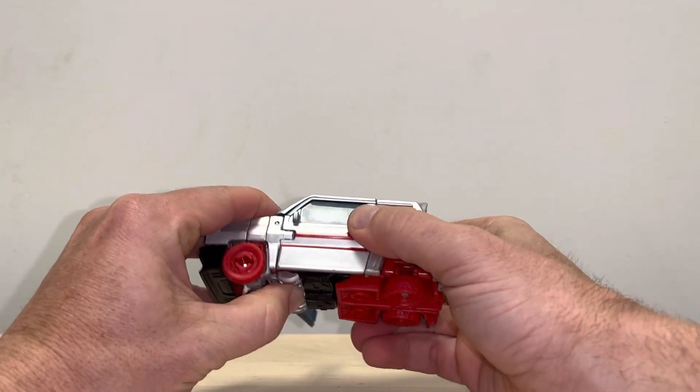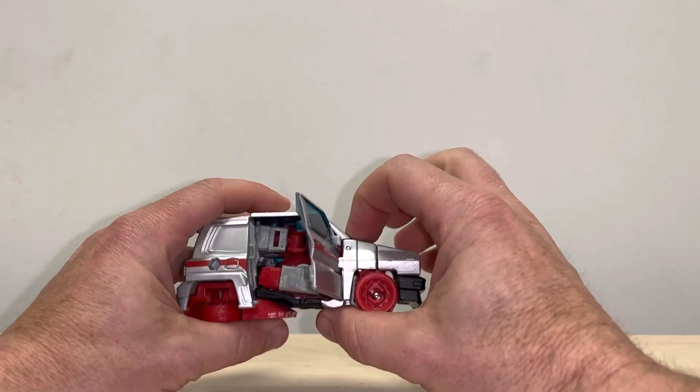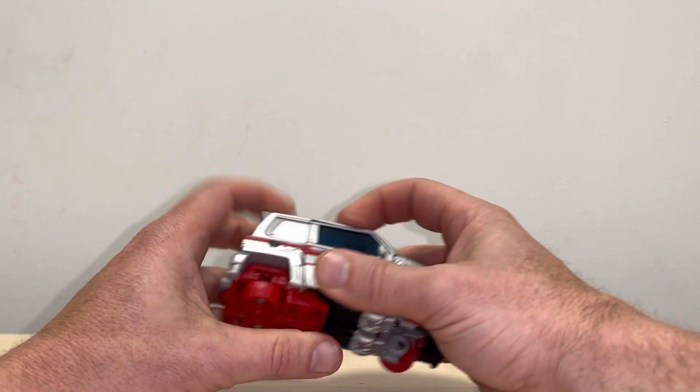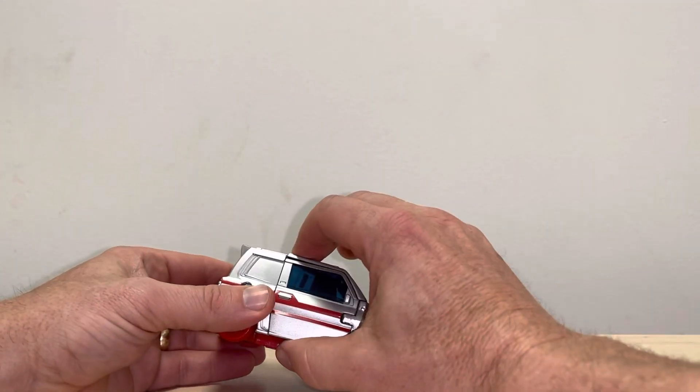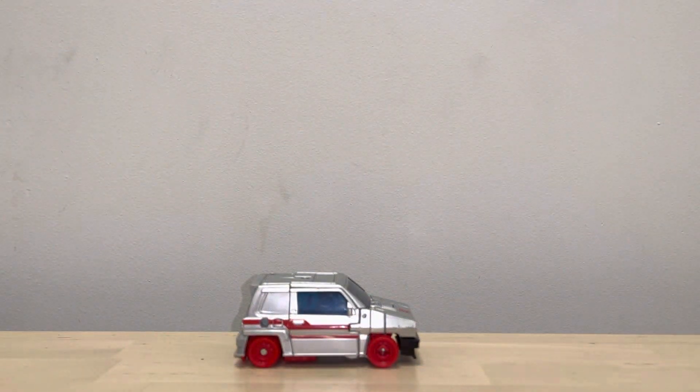Then what you're going to do, we're going to close the doors like so, close these down underneath as well. Make sure the windscreen is in, close the door, and then the final bit we need to do is just fold out the wheels which are on the underside of this and make sure it's clipped in. And that is your alternate mode.